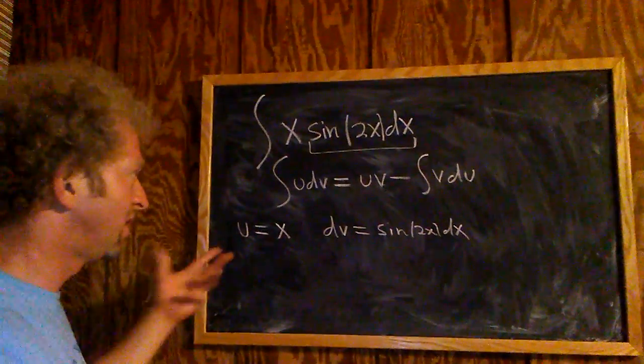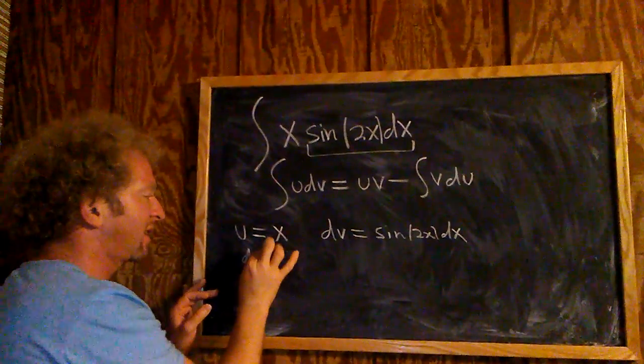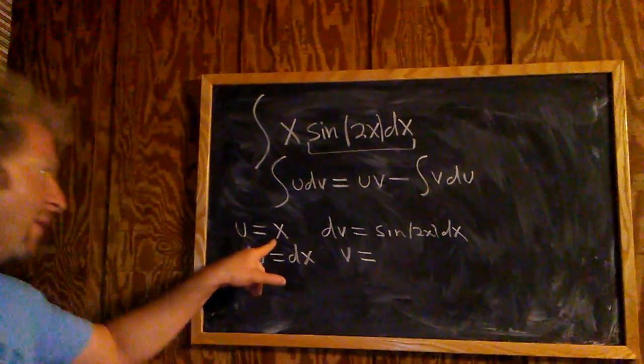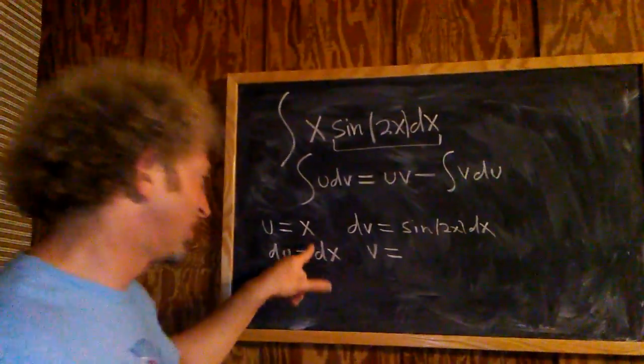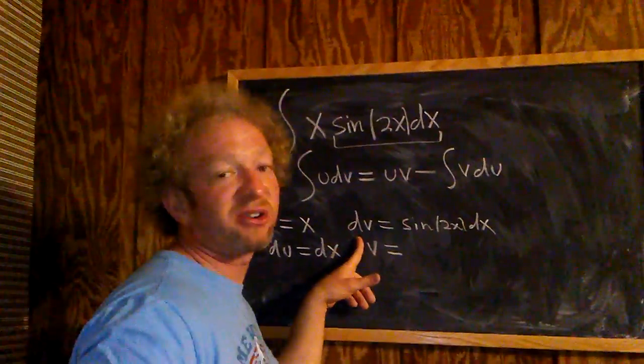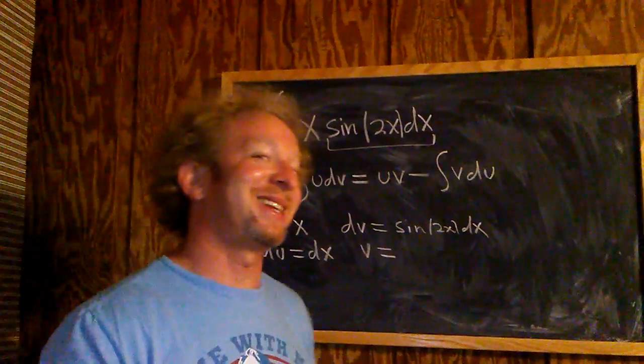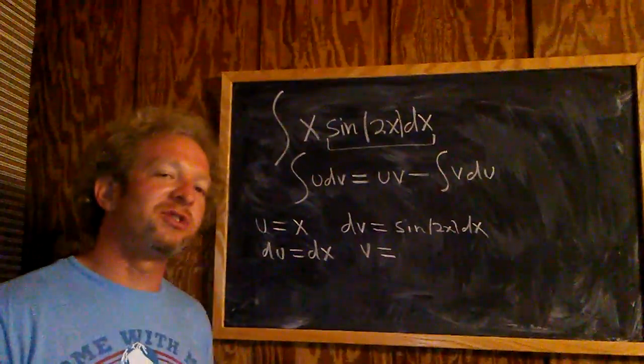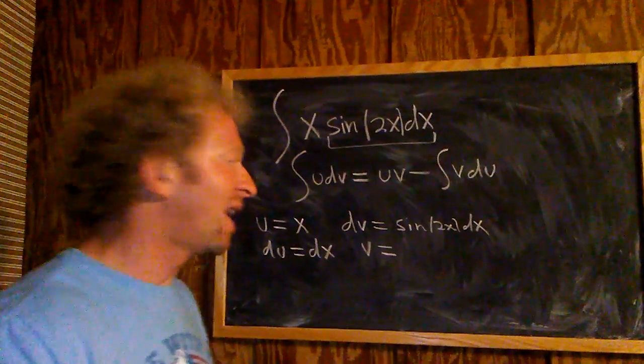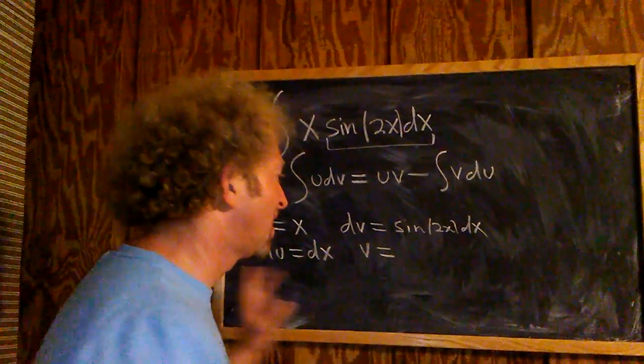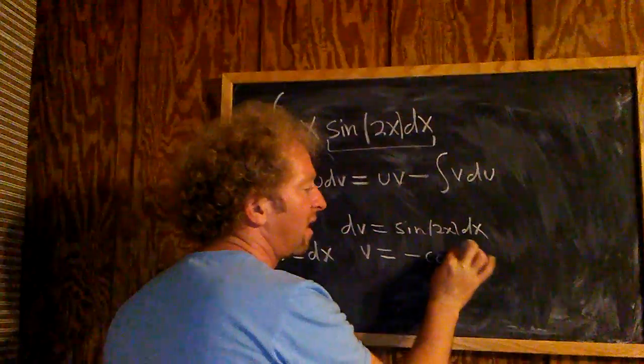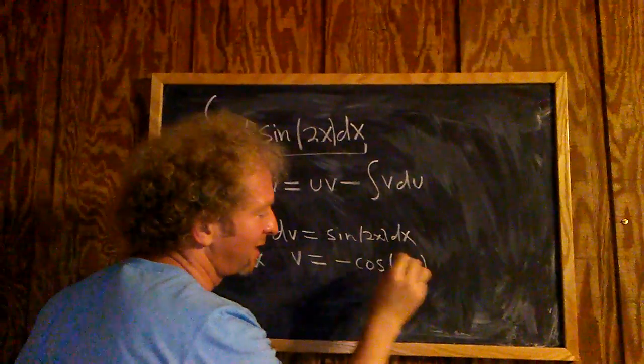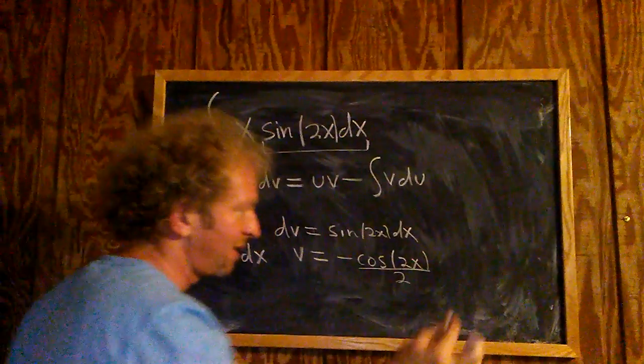So now you compute dU. So dU is simply dx, which is the derivative of x. And you compute V. V is the integral of dV. You have to integrate sine 2x in your head. So what's a function whose derivative is sine? Well, the derivative of cosine is negative sine. So this is going to be a negative cosine of 2x. And the trick is whenever you have a constant here next to the x, you can simply divide by that number. So let's just divide by 2.